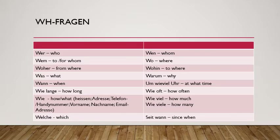So let's understand which are the WH question words. Most of them you must already know — we are just revising. 'Wer' means who, 'wen' means whom, 'wem' means to or for whom, 'woher' means from where, 'was' means what, 'wann' means when, 'wie' means how or what.